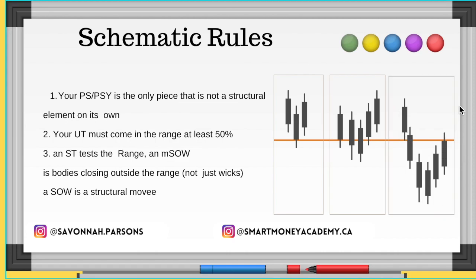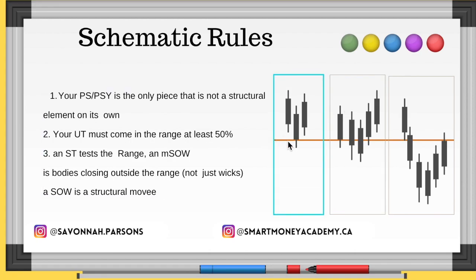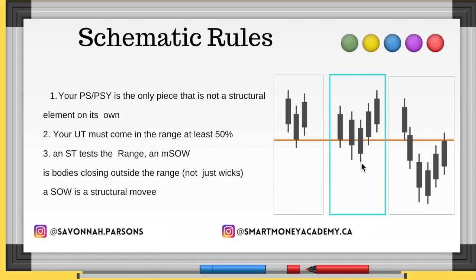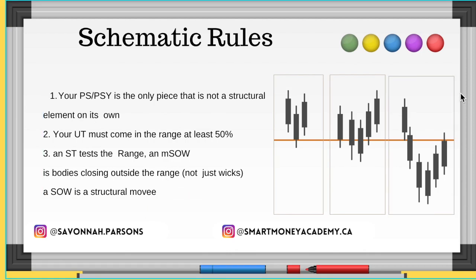A real sign of weakness is when your structural candles come outside the range and come back in. So after your UTAD, you should get a sign of weakness that comes outside the trading range — lower than your MSAL — completes, breaks structure down at some previous structure, and comes back in to fill your gap. That's a major key everyone's struggling with.